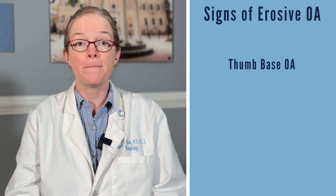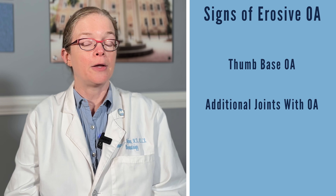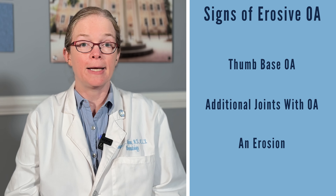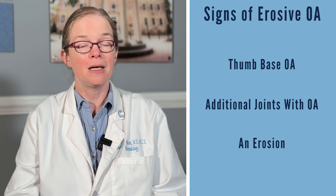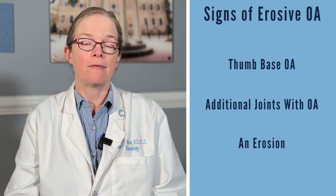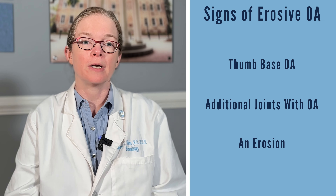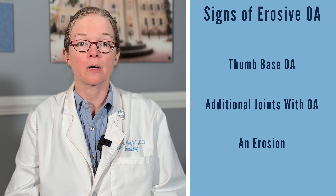So if someone has thumb-based osteoarthritis, which is incredibly common, along with other joints with osteoarthritis, and then an erosion, that might be erosive hand OA — and it probably is — versus having systemic findings of a more inflammatory process like rheumatoid arthritis.